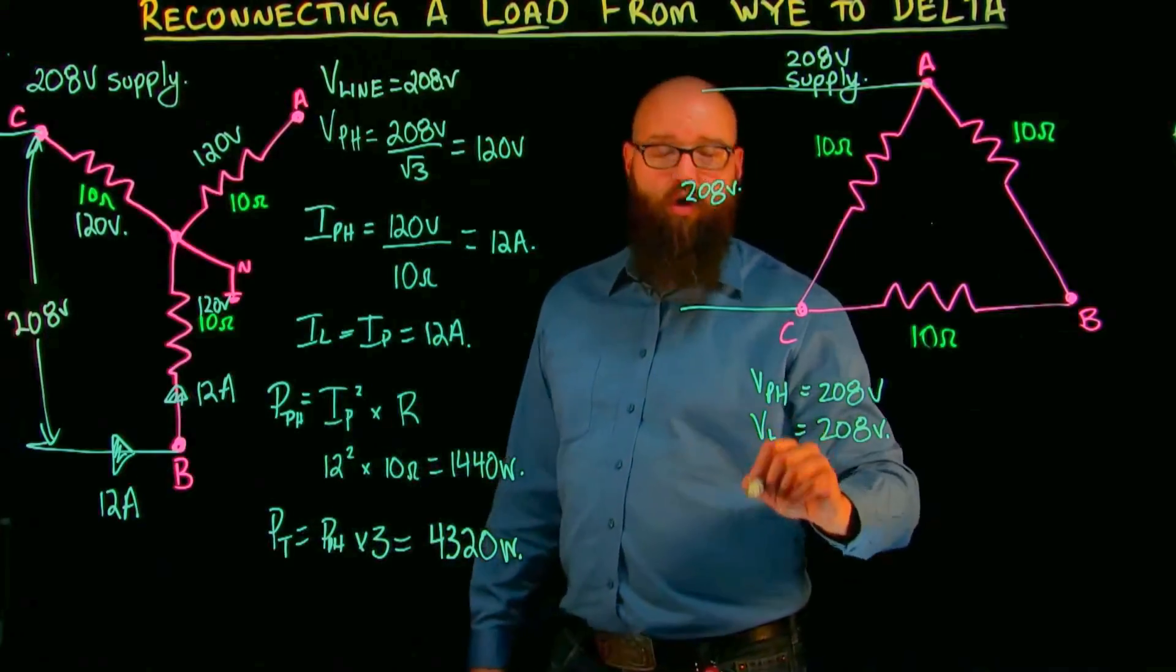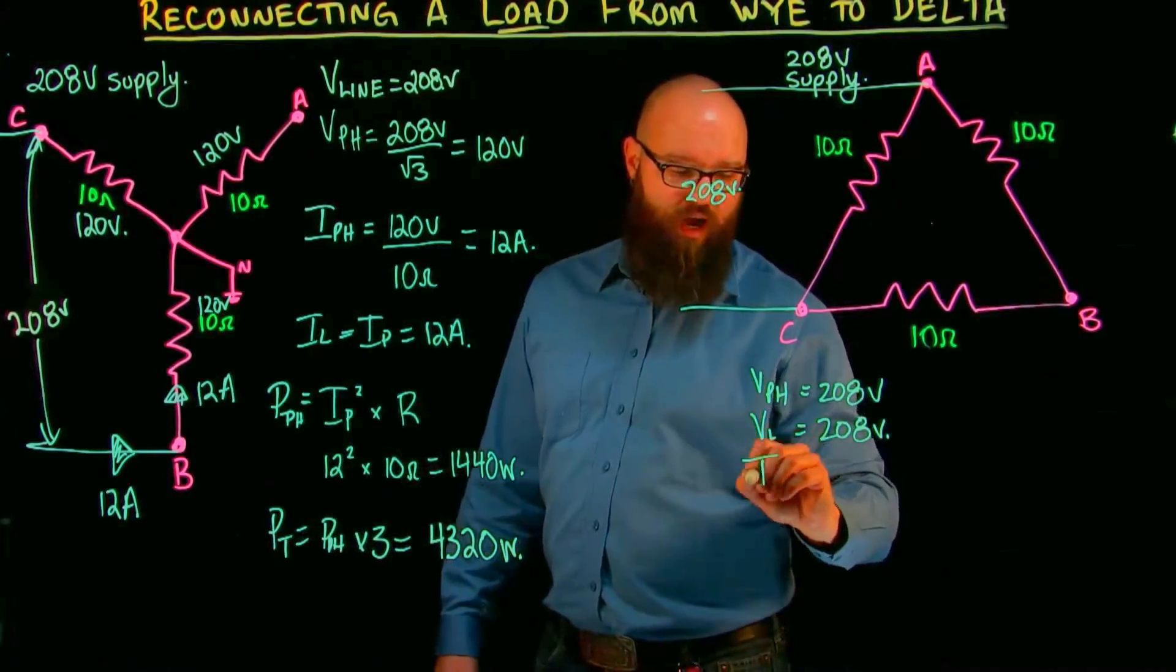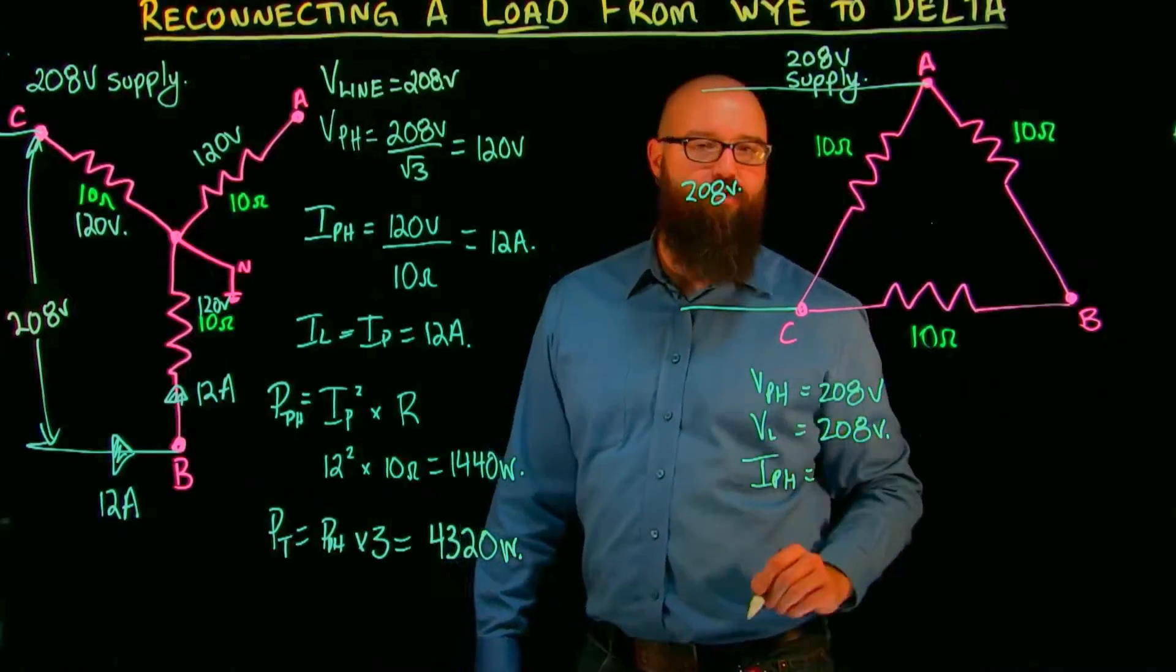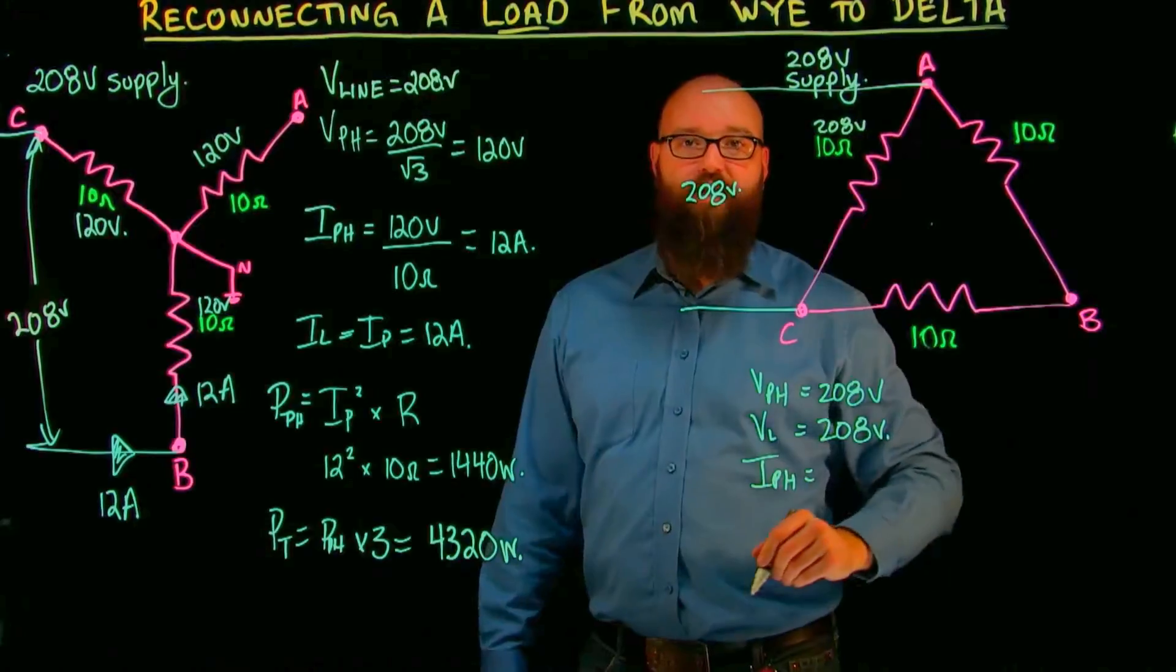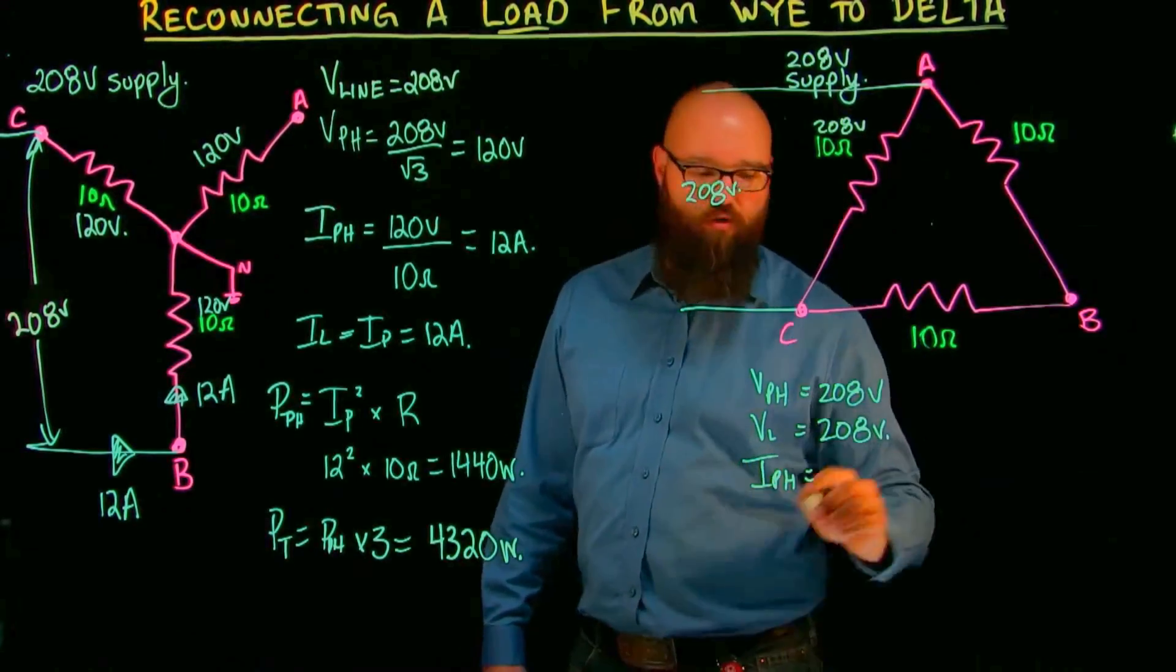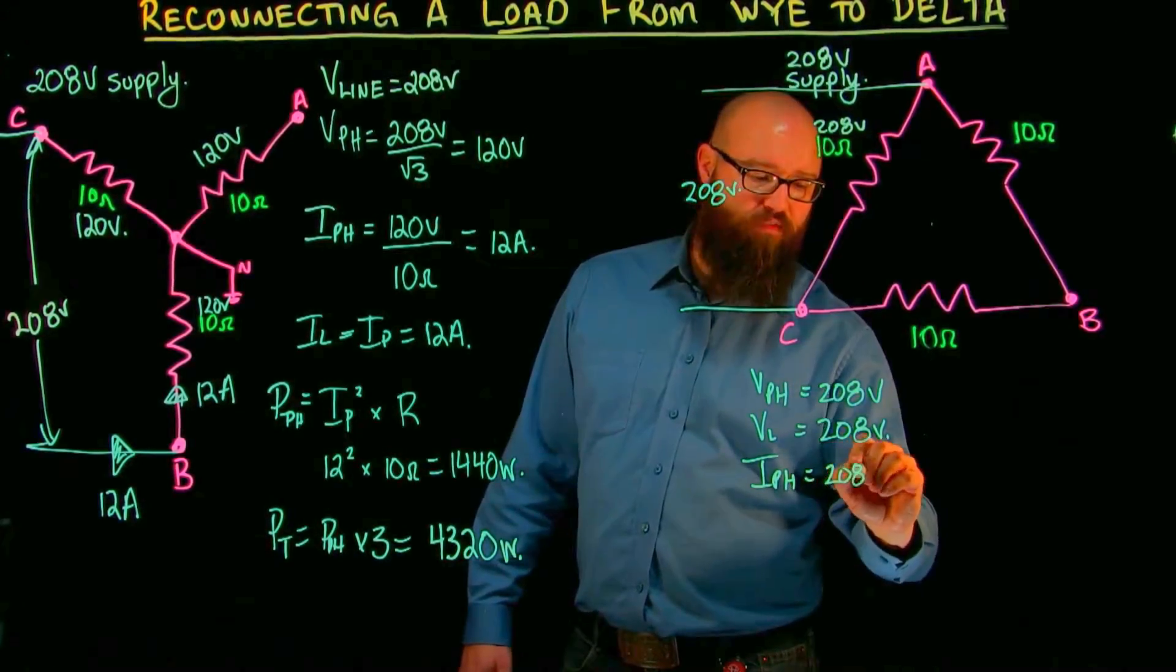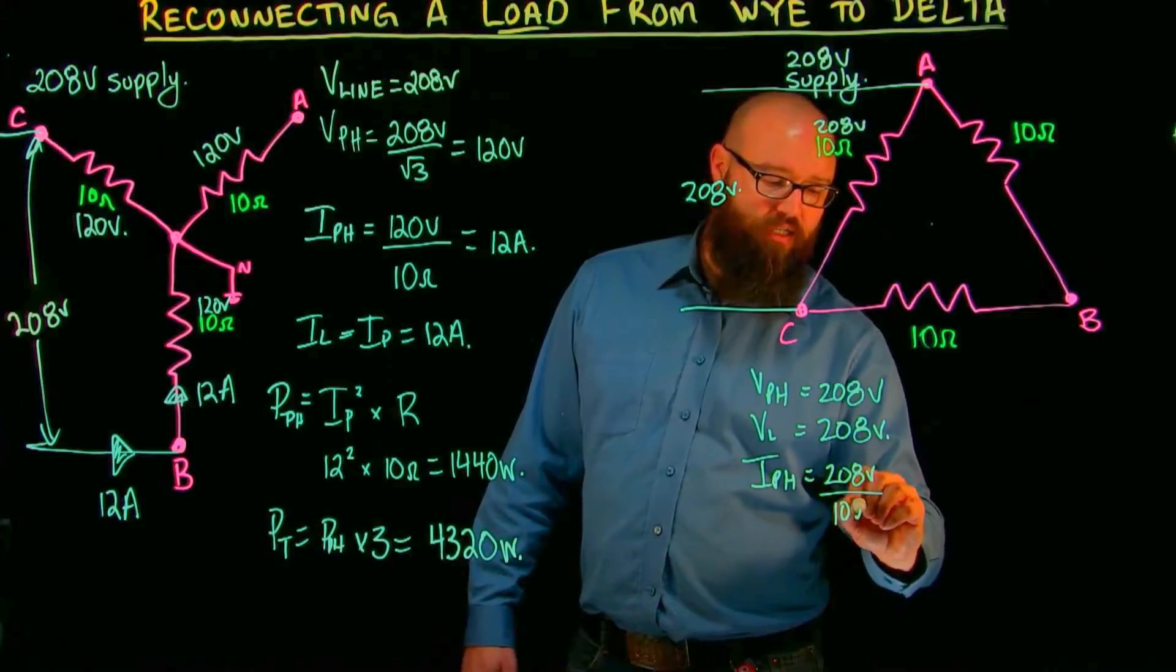Let's find I phase is equal to the voltage of the phase, which is 208 volts, divided by the impedance of the phase, which is 10 ohms. 208 volts divided by 10 ohms.